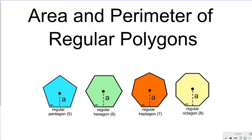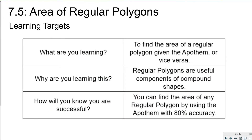Hi guys and welcome to the video on area and perimeter of regular polygons. In this video I'm going over the area of regular polygons when you're given the apothem, or perhaps you need to work backwards and find the apothem given the area. We're doing this because regular polygons are useful components of compound shapes, and you'll know you're successful when you can find the area of any regular polygon using the apothem.